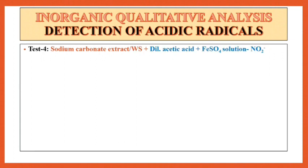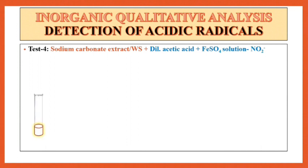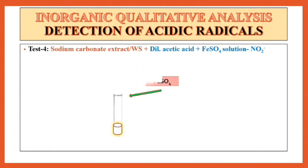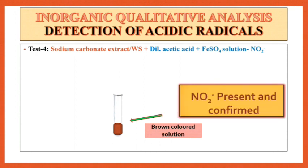Next test is test 4 for the detection of NO2⁻. For that, use sodium carbonate extract or water solution. To this solution, add dilute acetic acid drop wise and then shake it well. After shaking, add freshly prepared FeSO4 solution drop wise. If a brown color solution is observed, then NO2⁻ is present and confirmed.